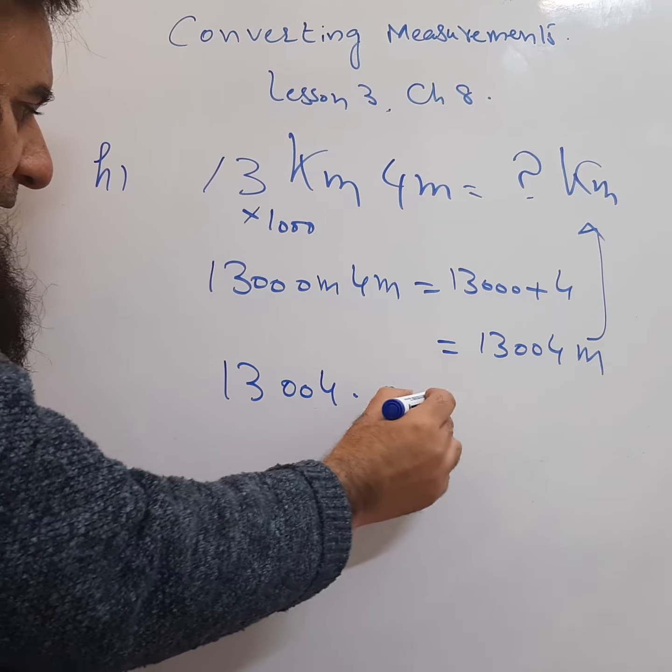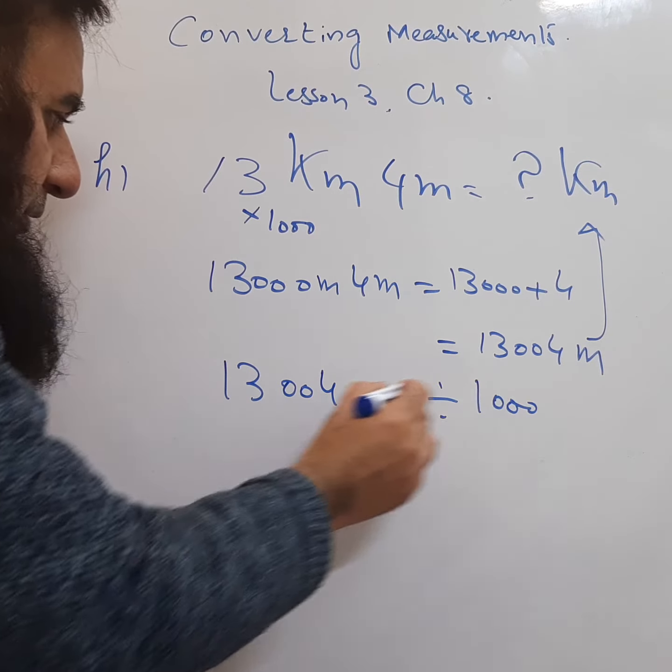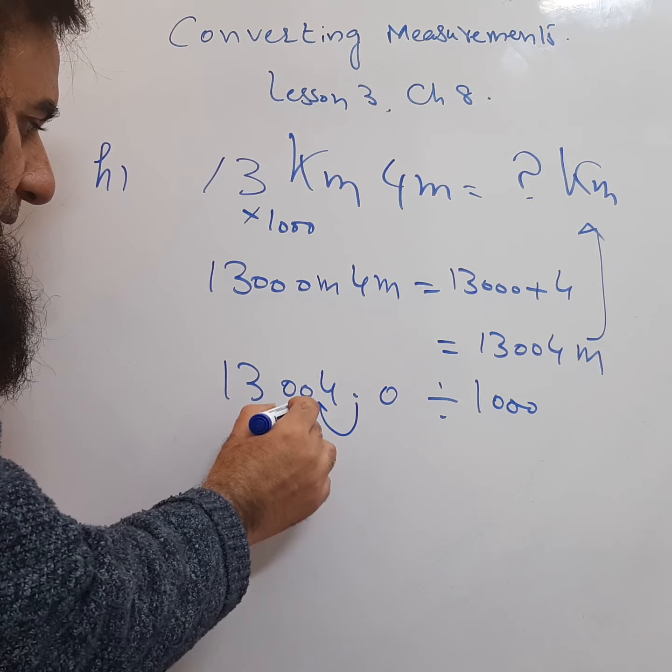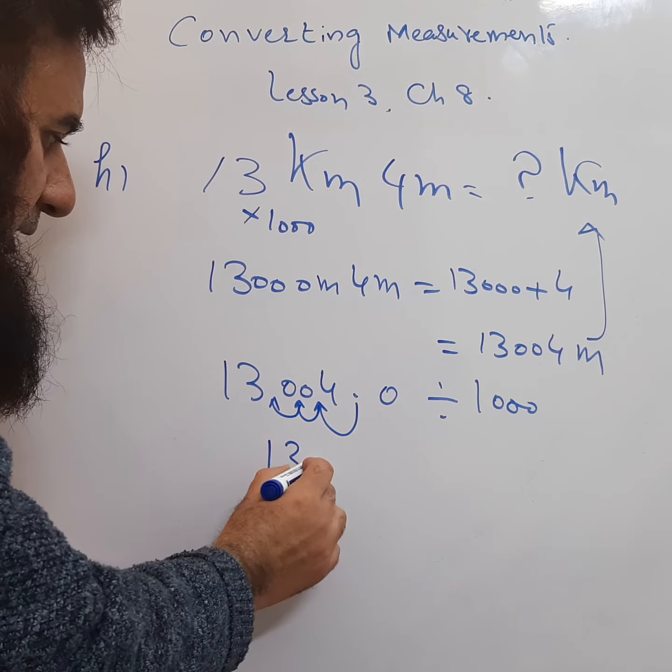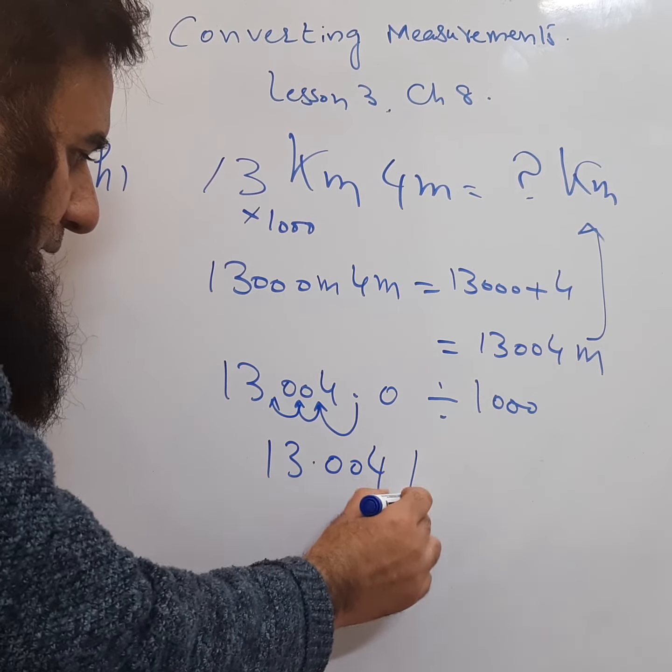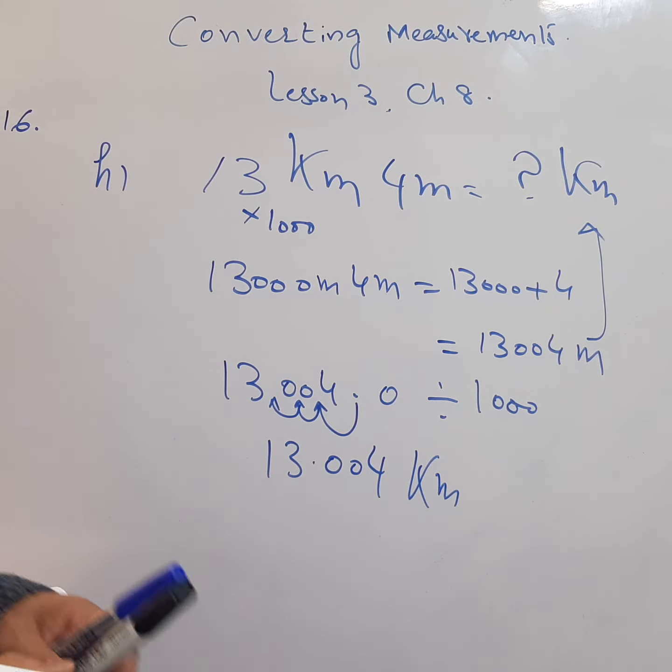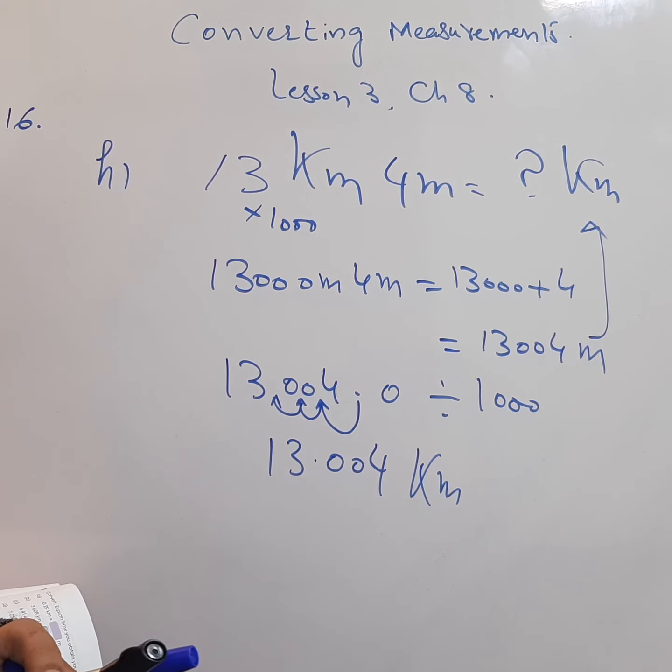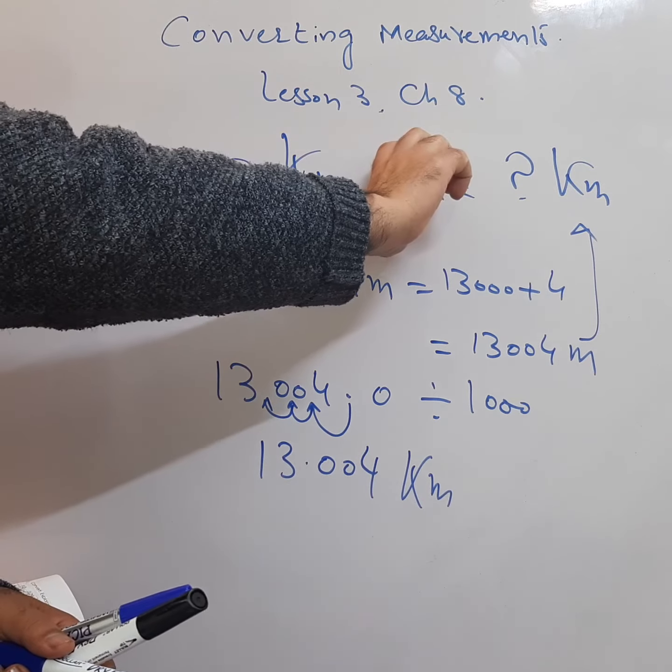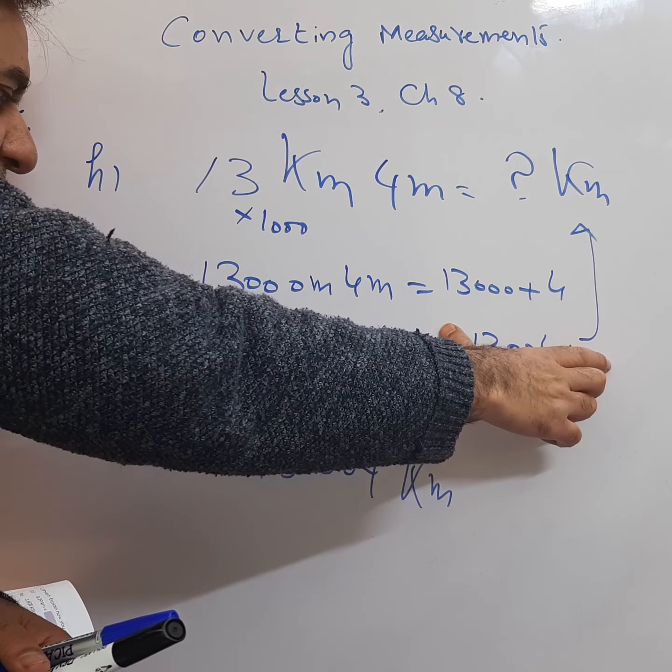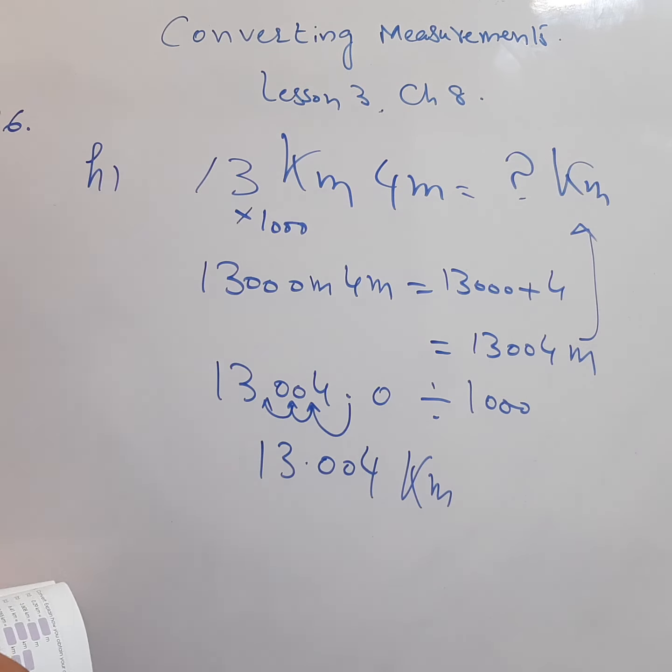Divide it with 1000. We need to shift the decimal 3 times - 1, 2, 3 - it becomes 13.004 kilometers. This was a two-step question. First, we converted everything into meters, and then divided by 1000 to get kilometers.